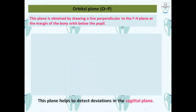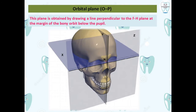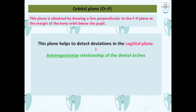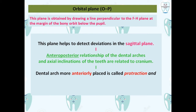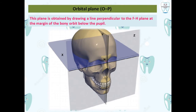The orbital plane helps detect deviations in the sagittal direction. It tells about the anterior-posterior relationship of the dental arches and the axial inclination of the teeth, both related to the cranium. A dental arch that is more anteriorly placed is called protraction, and one that is posteriorly placed is called retraction. In the figure, the plane marked as Z is the orbital plane, perpendicular to the FH plane.